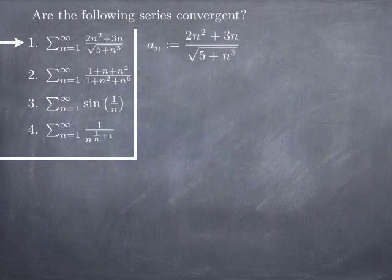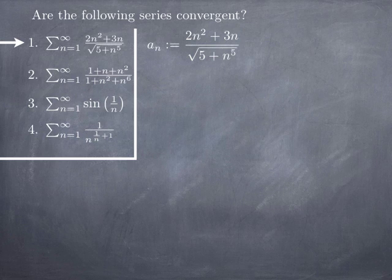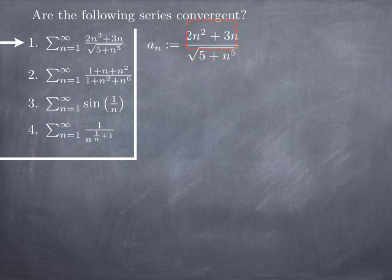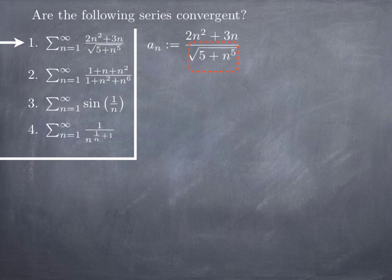Now we look at four additional examples, starting with the series from 1 to infinity of (2n² + 3n) divided by the square root of (5 + n⁵). We set a_n equal to that general term and try to determine what to compare it with. The top, 2n² + 3n, for large n should behave like 2n², while the bottom, √(5 + n⁵), should behave like √(n⁵) = n^(5/2). But the problem is the inequalities go in opposite directions — we are dividing by something greater than √(n⁵), giving something smaller than 1/n^(5/2) — so the directions conflict when comparing top and bottom.